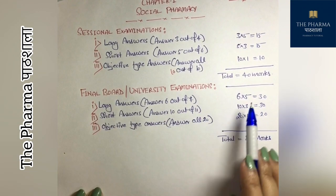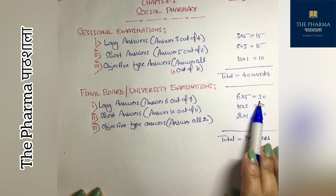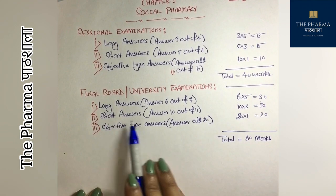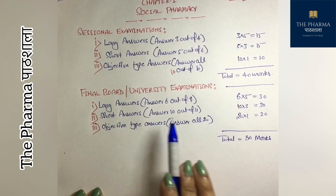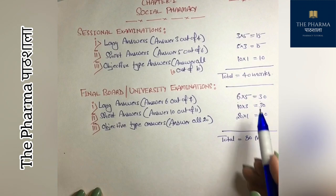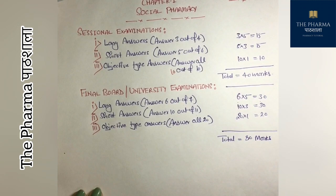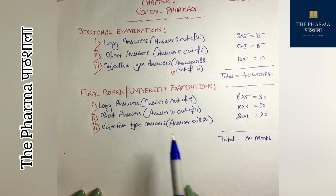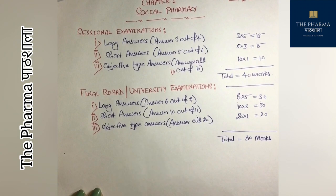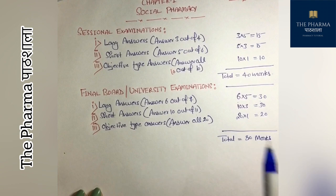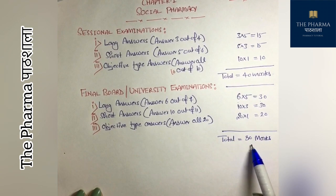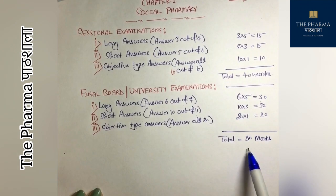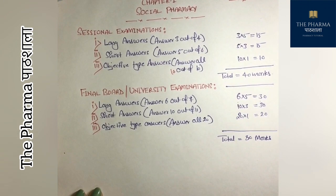For the final exam: long answer questions — 5 marks each, 6 questions total, attempt any 5, giving 30 marks total. Short answer type questions — 11 questions, 10 attempts, 3 marks each, total 30 marks. Objective type includes multiple choice questions, fill in the blanks, one-word answers, and one-sentence answers — 20 questions worth 1 mark each, totaling 20 marks. Grand total: 80 marks.